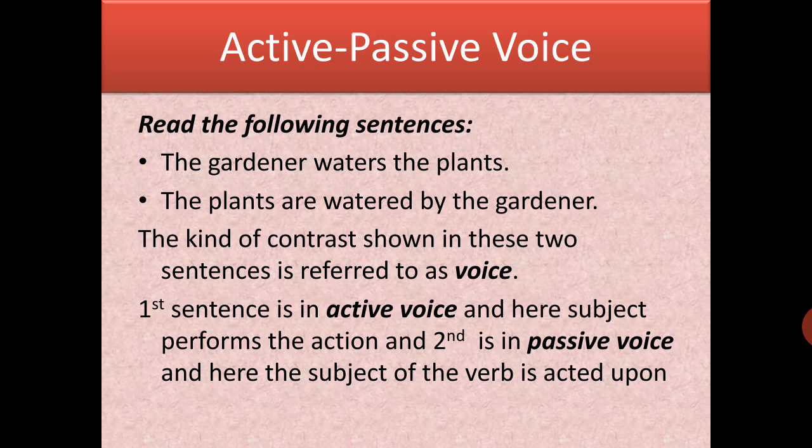In the first sentence, 'The gardener watered the plants' — it is active voice. In the second sentence, 'The plants are watered by the gardener' — it is passive voice. In the first sentence, the subject is performing the action. But in the second sentence, the subject of the verb is acted upon. The subject is coming at the end — the positions are changed.